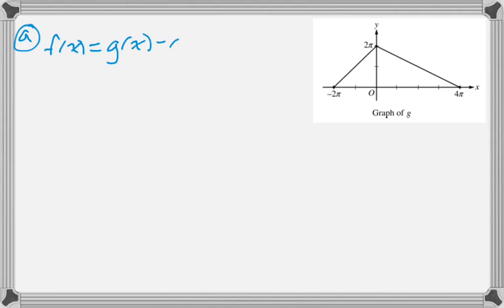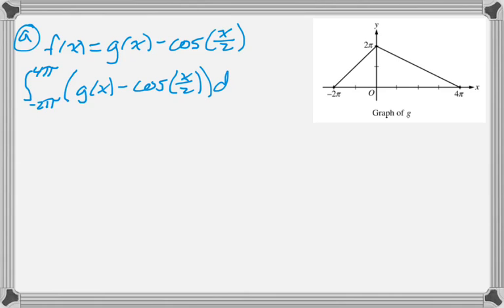So f of x is defined to be g of x minus the cosine of x over 2, and g of x is that graph given to the right there. So the first thing we're asked to find is this definite integral from negative 2π to 4π of f of x, which is g of x minus cosine of x over 2 dx. So we're going to break this up because it's really two different functions we're dealing with.